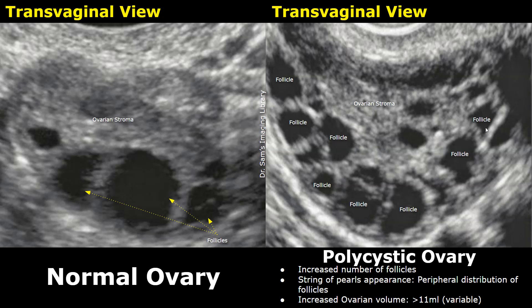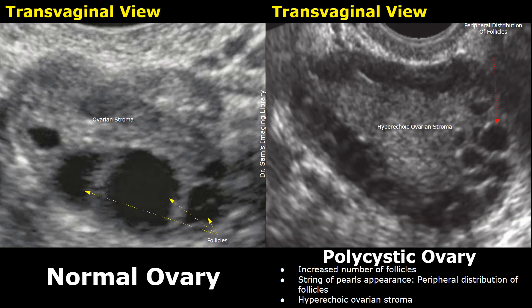The ovary will be enlarged as well, with ovarian volume exceeding 11 milliliters. However, this value can be different amongst different patients. This is another image showing a polycystic ovary. You can see various follicles all around the periphery — the string of pearls sign.